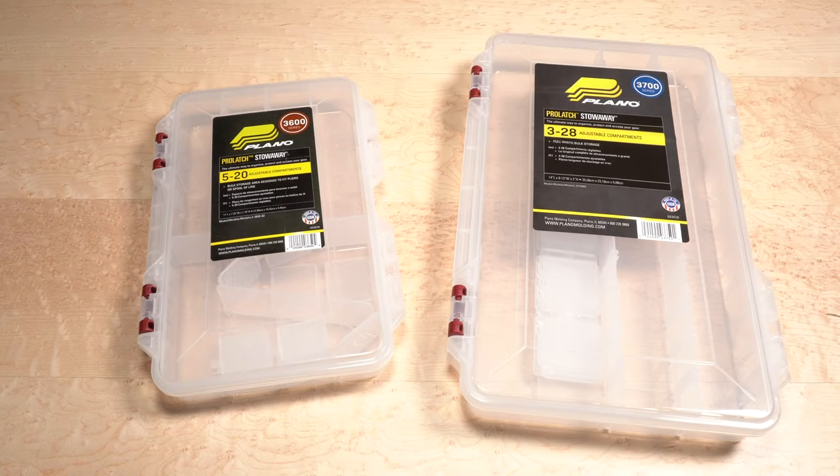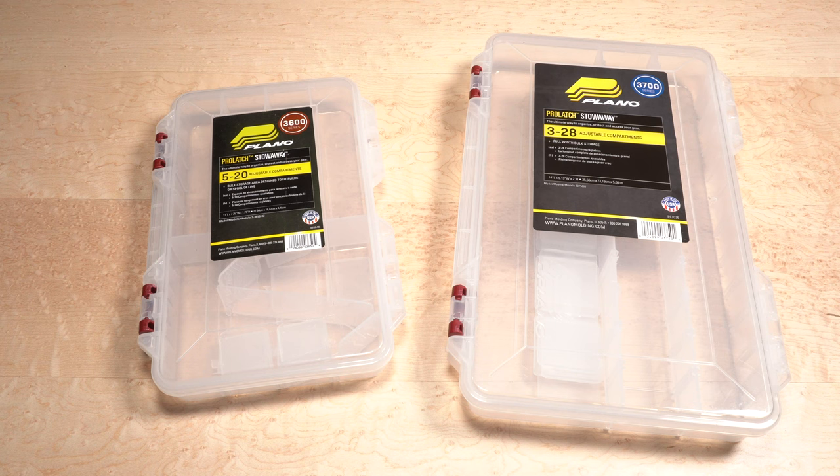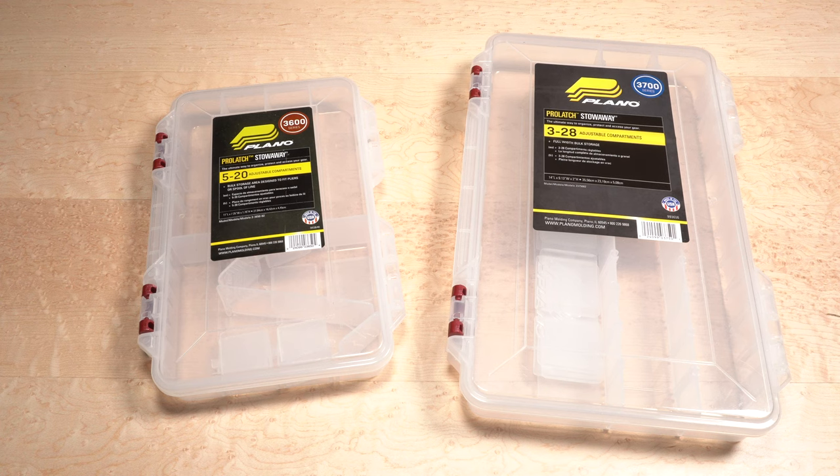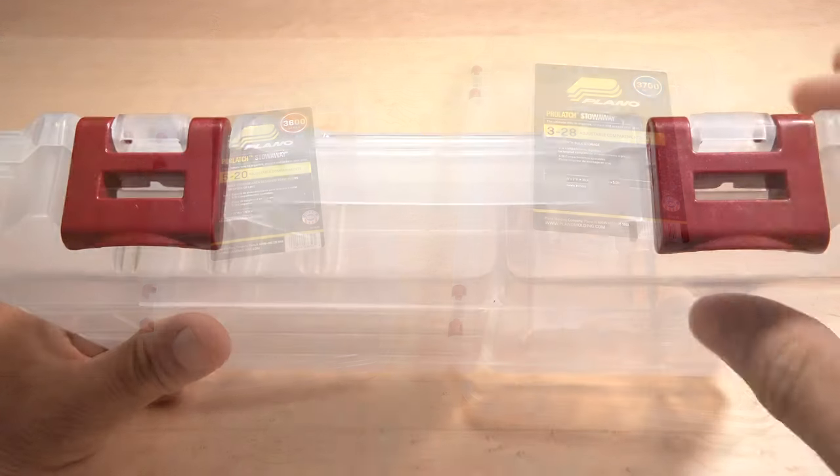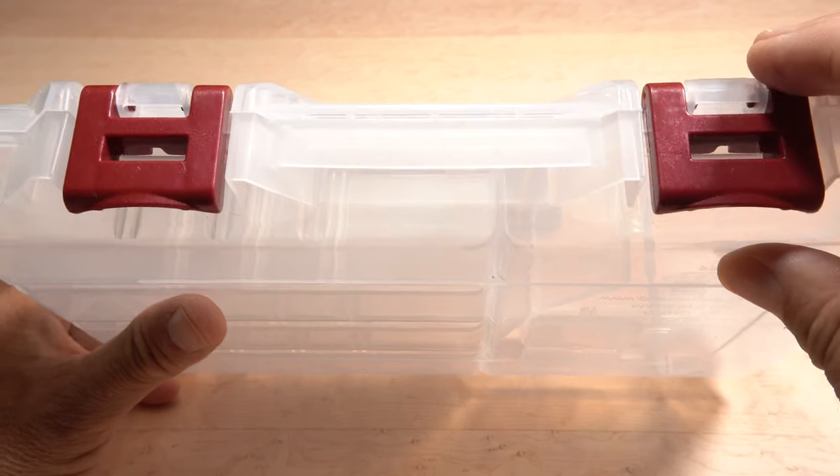In part one of organizing fly tying stuff, I sang the praises of Plano 36 and 3700 series stowaway boxes. Here's how I keep track of what each box contains. Both series of boxes have a nice little flat area between the two latches that's just perfect for labeling.